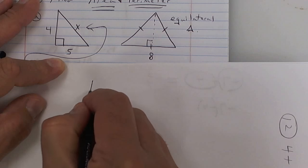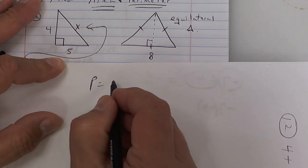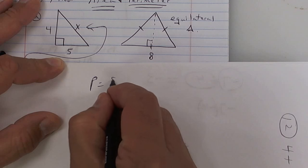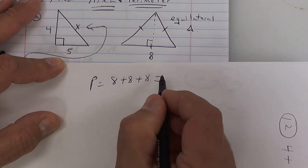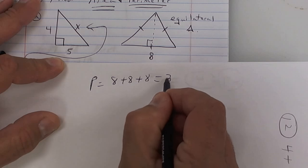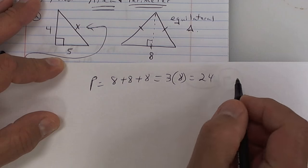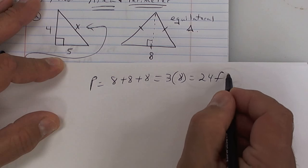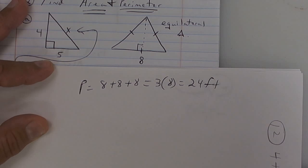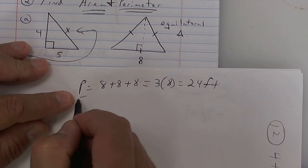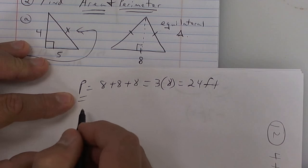Perimeter is easy on this one because you have 8, 8, and 8. So basically it's 8 plus 8 plus 8, or 3 times 8, because you have 3 of these. So it's 24 inches or feet. It's perimeter, so don't put square. Now let's do area.